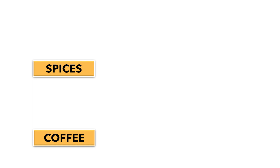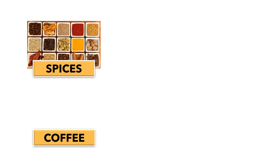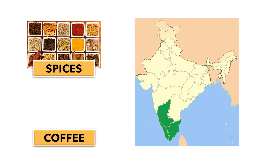Spices including clove, cardamom, pepper, chilies, coriander seeds, turmeric, ginger etc. are also grown in India. Kerala and Karnataka are the major producing states of spices in India.